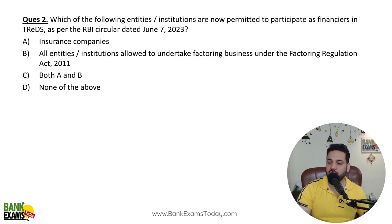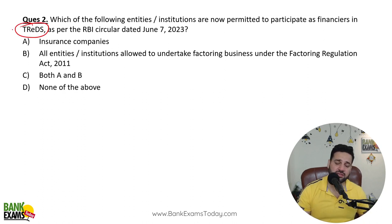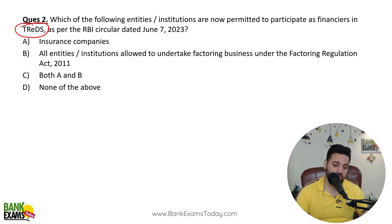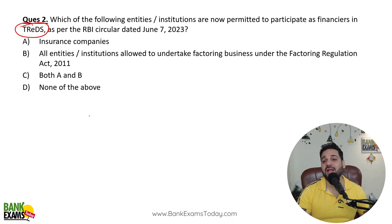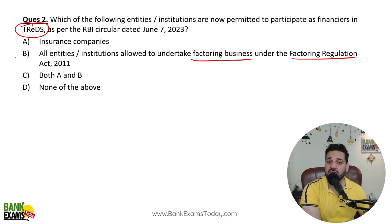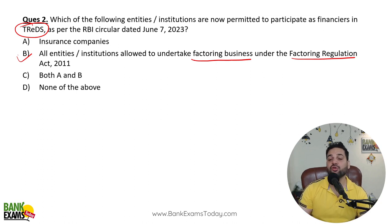Which entities and institutions are now permitted to participate as financers in TReDS? There is a latest RBI guideline related to the TReDS platform — the Trade Receivable Discounting System — which is related to bill discounting. In day-to-day business, there are bills which can be discounted from the bank. RBI has now allowed factors — institutions permitted to undertake factoring business under the Factoring Regulation Act 2011 — to participate as financers.